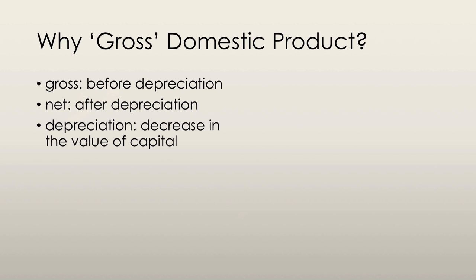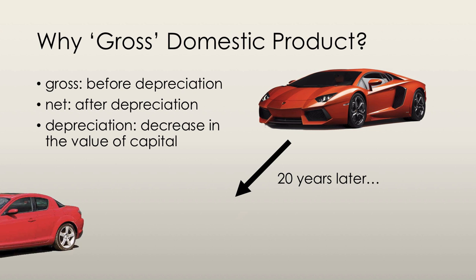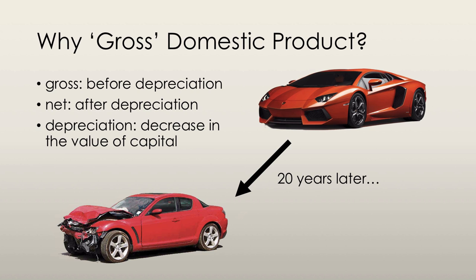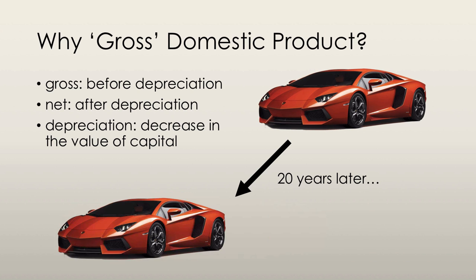Why do we call gross domestic product 'gross'? Gross means that we have counted the total value of the goods and services before subtracting the depreciation of capital. Net GDP, by contrast, is after subtracting the depreciation of capital. Depreciation is simply the decrease in the value of capital that results from wear and tear. For example, if you buy a new Lamborghini, 20 years later it's not going to be as fast and there will be wear and tear, so it won't be worth as much. GDP still thinks you're driving the same Lamborghini you bought 20 years ago, but in reality that's not the case.